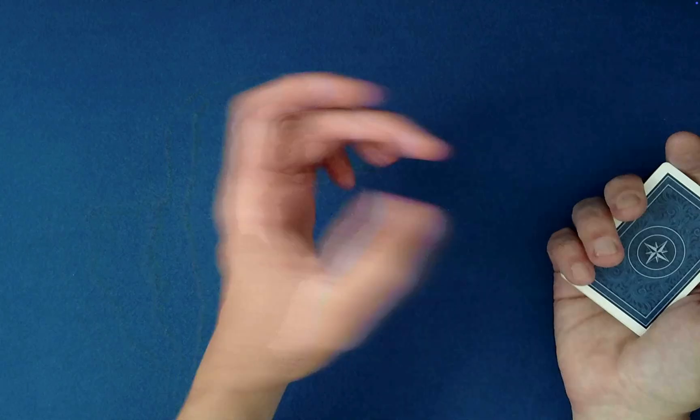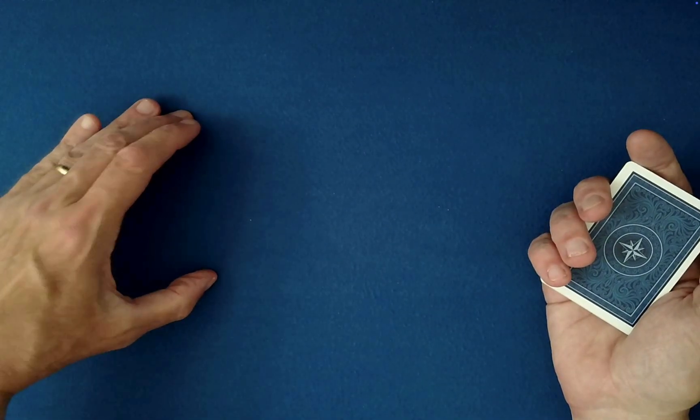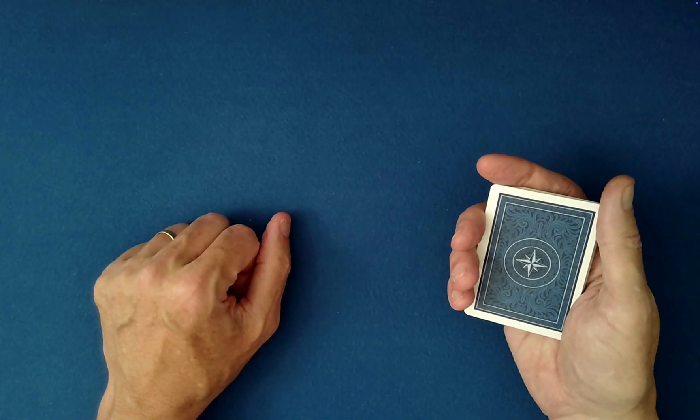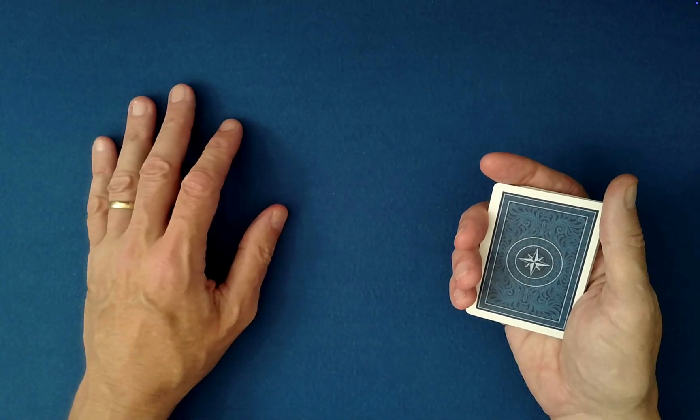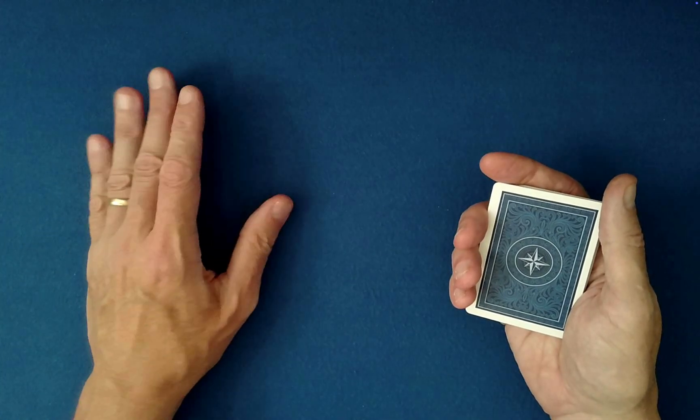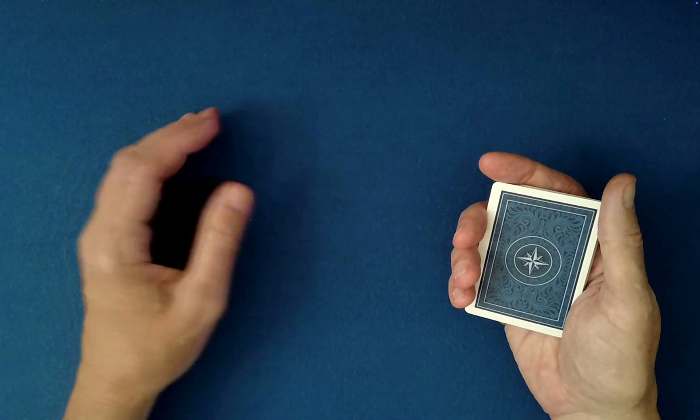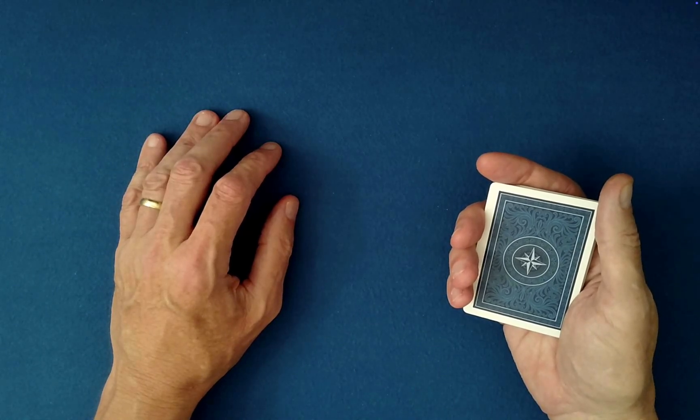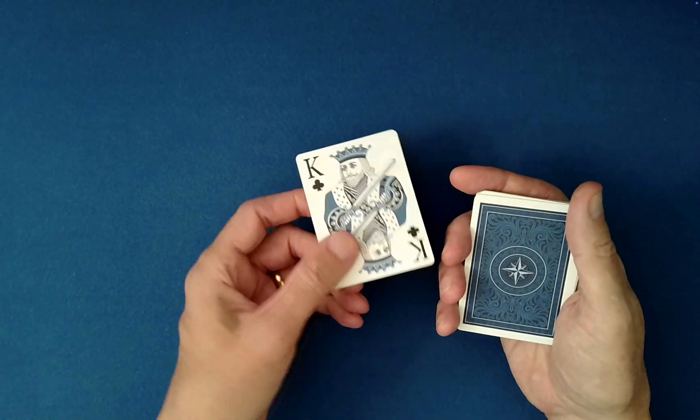From there, you have them choose any random number between one and 16, and then you just do this spelling routine: 'your card is the,' then spell out the name of their claimed card, and then spell out 'your card is the,' and their card is guaranteed to rise to the top, which is really pretty remarkable.